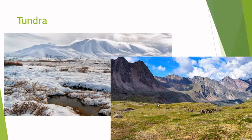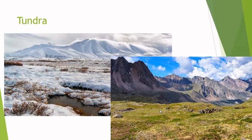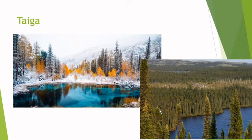A bit further south we find the tundra, where in winter it's always frozen with a lot of snow, but in spring and summer it melts and we can find grass. We can find many herbivores especially in the summer. Then we've got the taiga — it's very cold too, but we find large pine trees and pine forests. Similar to the tundra, it's frozen in winter and melts in summer.